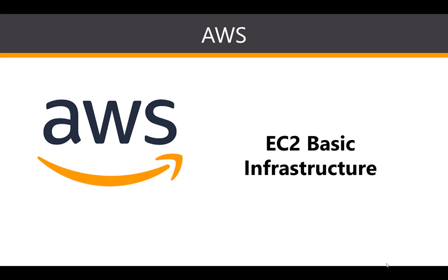Hi everybody and welcome to this lesson on the basics of EC2 infrastructure. In this lesson we're going to take a look at some of the basics of EC2s — what they are, how they operate, how the infrastructure works. An EC2, or Elastic Cloud Compute, provides basic scalability and computing capacity in AWS. In other words, they are virtual machines or virtual servers offered by AWS, referred to as Elastic Cloud Compute, hence the name EC2.